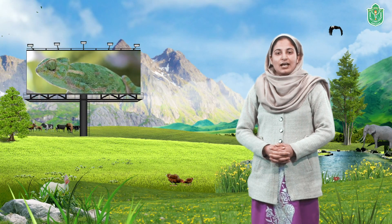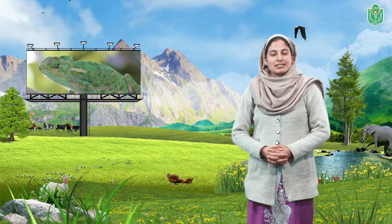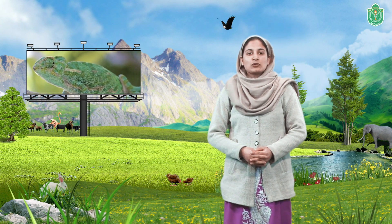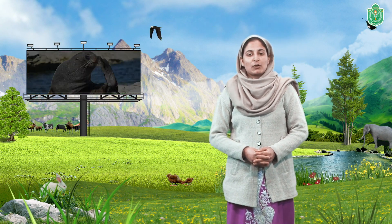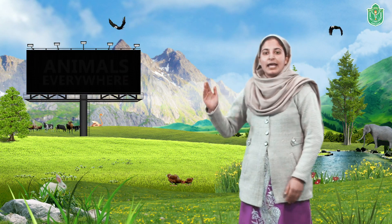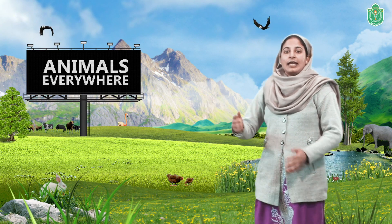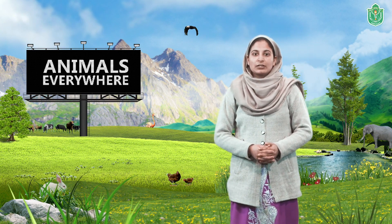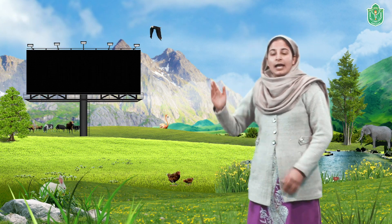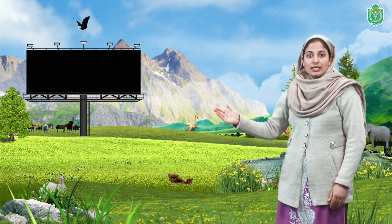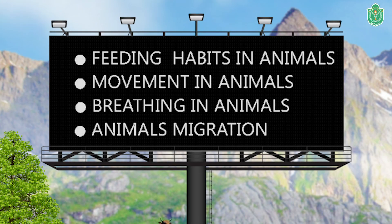Hello students, I'm your science teacher Naushin Amrabi. Today we are going to learn about the chapter Animals Everywhere. In this chapter we are going to learn about habitat and its types, feeding habits in animals, movement in animals, breathing in animals, and lastly animal migration. So let us discuss them one by one.